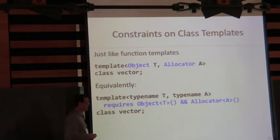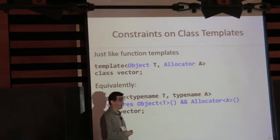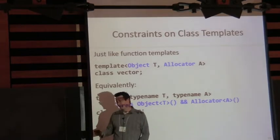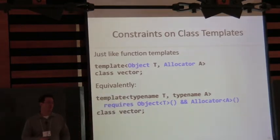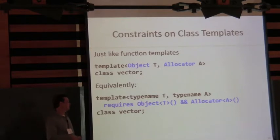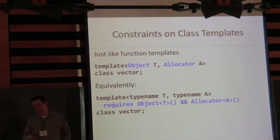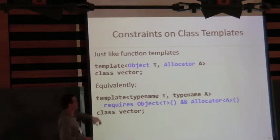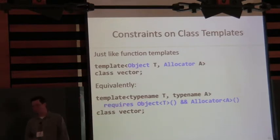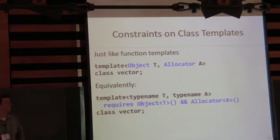We can also constrain class templates. A vector's object type might be constrained by the concept ObjectType, and obviously Allocator is a concept. Again, we do the equivalent transformation — if you don't satisfy these constraints, the class template can't be instantiated.